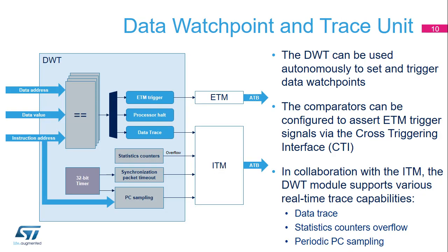The DWT supports more features than just implementing data watchpoints. The four comparators on the left of the figure detect a match condition on either a data address or an instruction address. Comparator number 1 can also be configured to detect a match condition on a data value. The following actions are supported when a match condition occurs: halting the core, which is the watchpoint feature; asserting a trigger signal to the CTI; and generating a trace packet to report the data access and passing it to the ITM so that it can be exported.